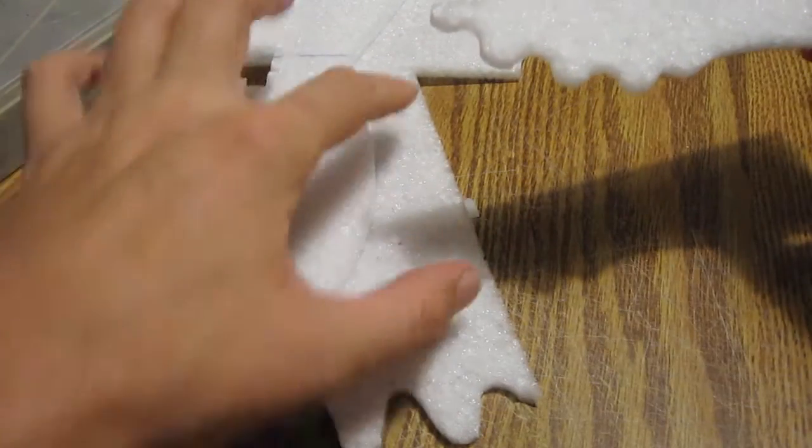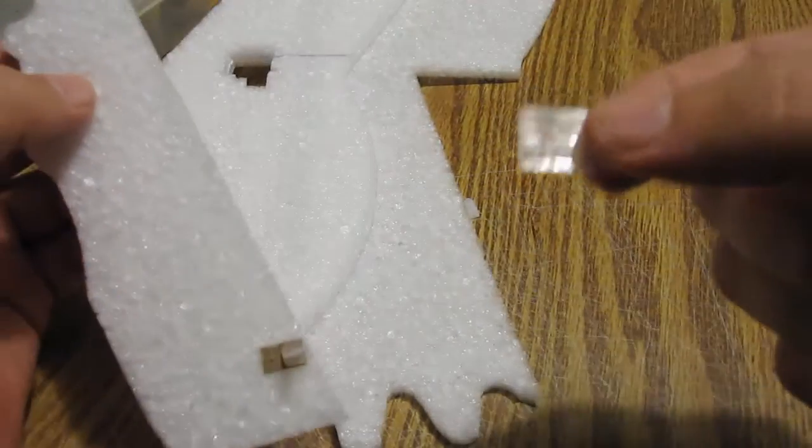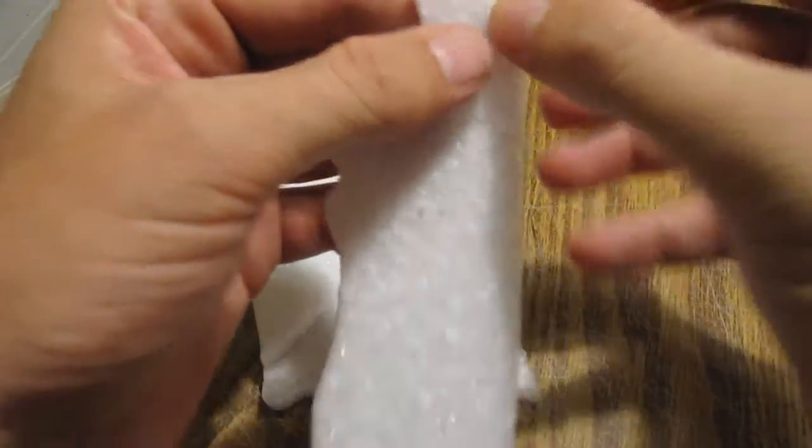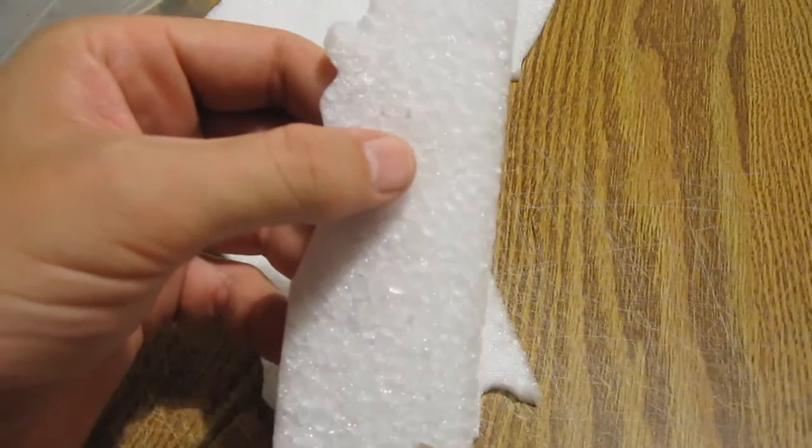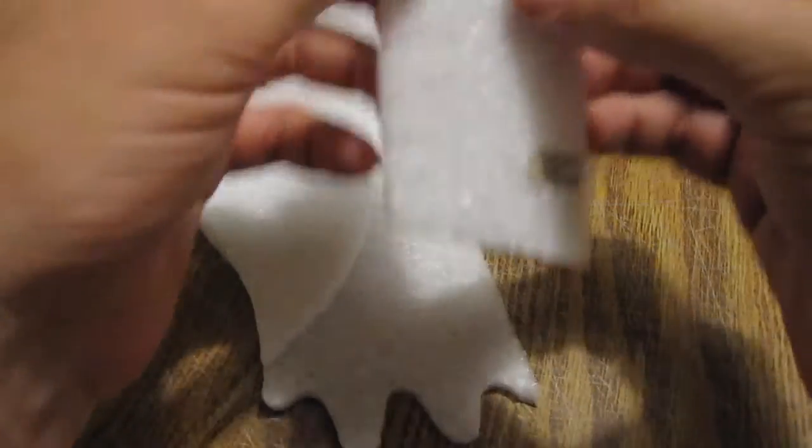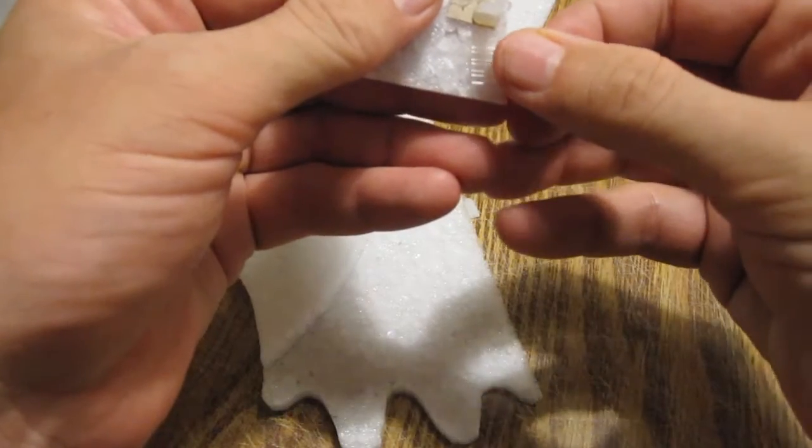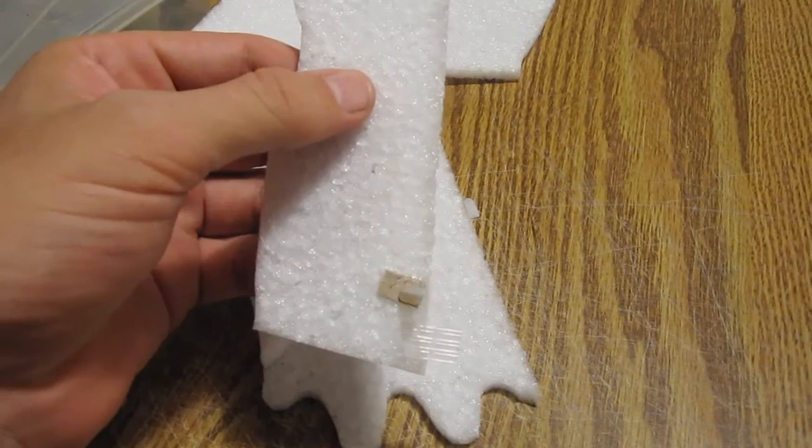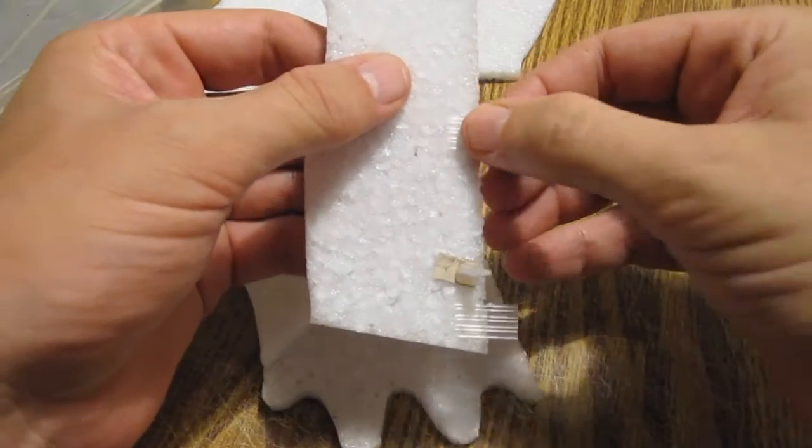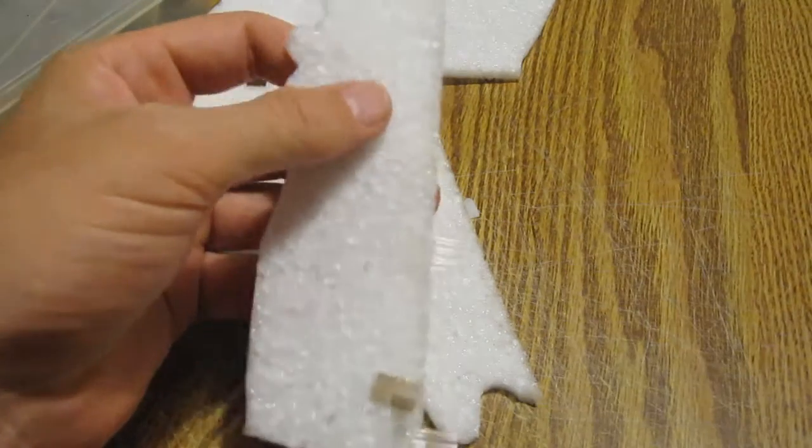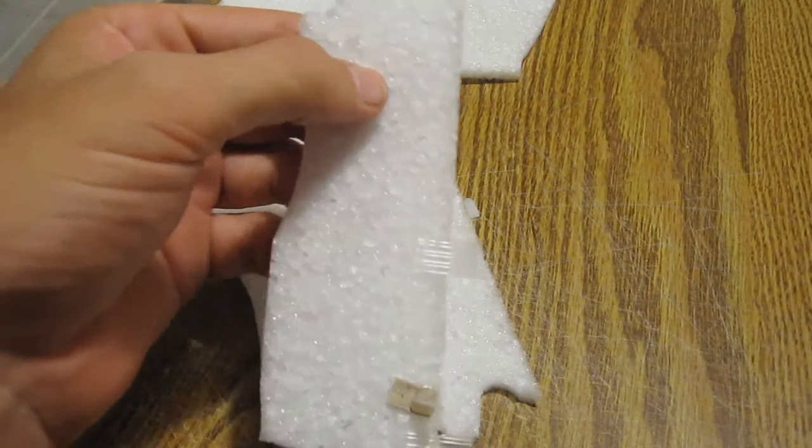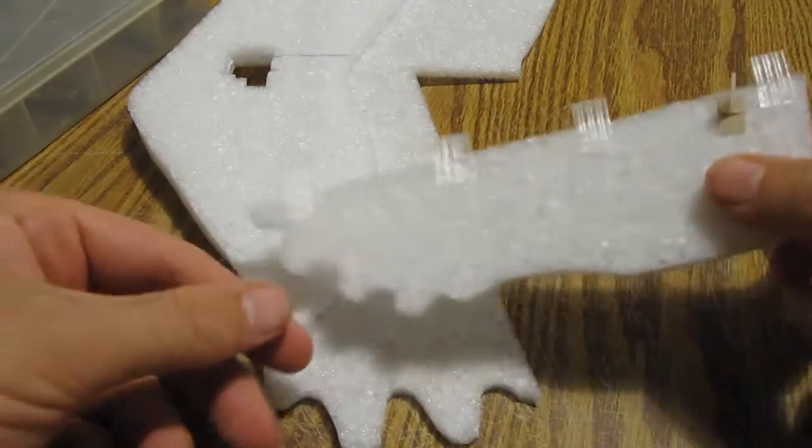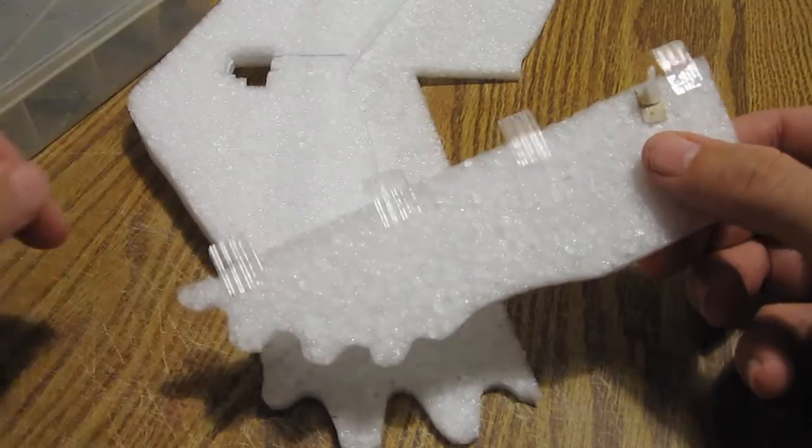So the way we're going to attach this to the wing here is we're going to take some little pieces of strapping tape and we're going to put these on, about four of these: one here, one at the end here, one in the middle here, another one here. So we're going to put on here four pieces of tape if you can see this, four equally spaced pieces of tape.